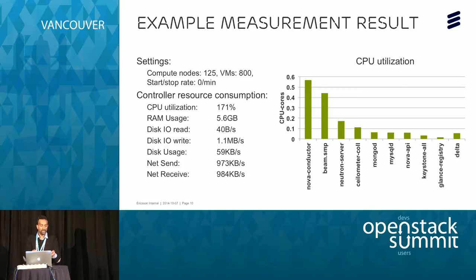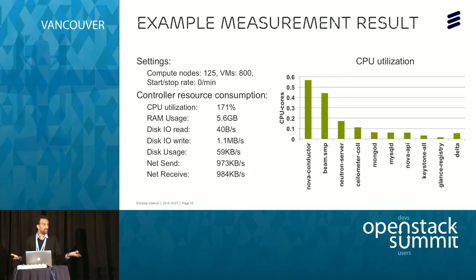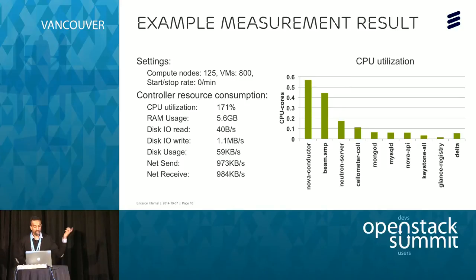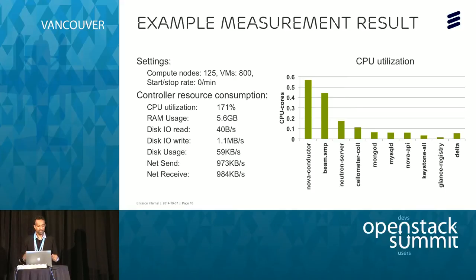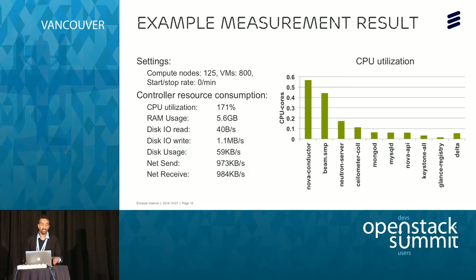Of course, you can now change your deployment settings — perhaps look into deploying with an additional controller node, changing available resources, or changing the VM start and stop rate to see how the system performs with user interaction. You can then use this information to tune the amount of resources needed for a production environment of this sort. That's the first approach.